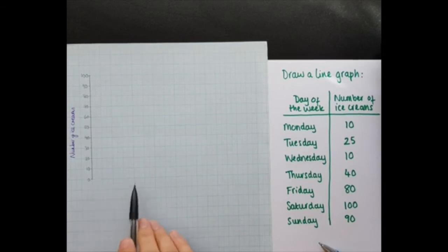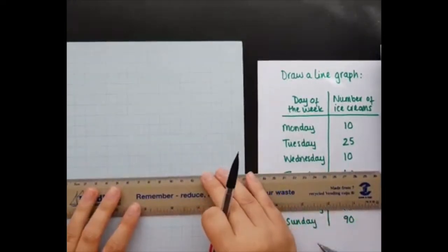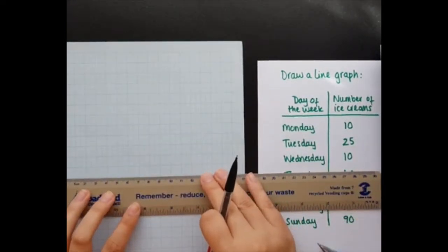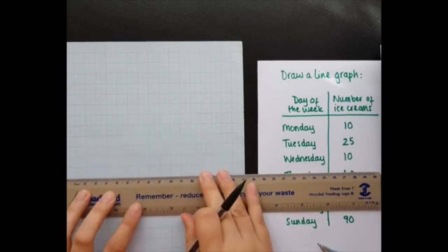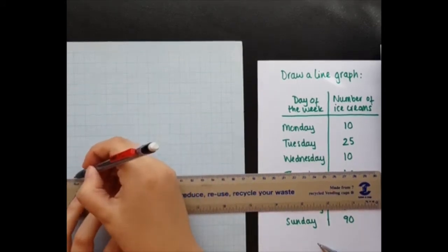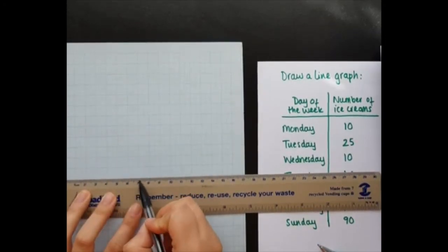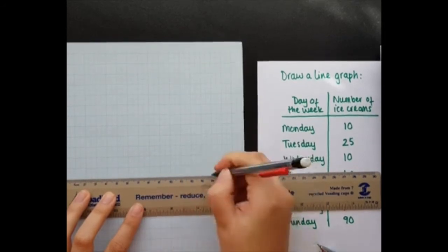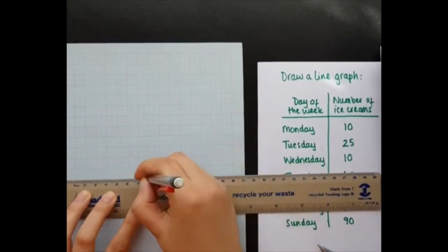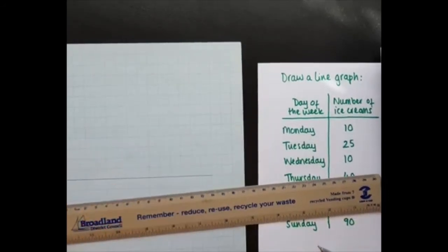And I'm now going to do my x-axis, which is my days of the week. So I am going to start one in. So I'm going to go Monday, Tuesday, Wednesday, Thursday, Friday, Saturday, Sunday. Actually, I'm going to have two boxes per day, because then that's giving me a bit of a bigger graph, a bit of a bigger space to play with.